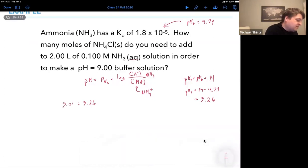So 9.00 plus log base 10 of our base is 0.1. We need to know the concentration of ammonium chloride that we need to add.